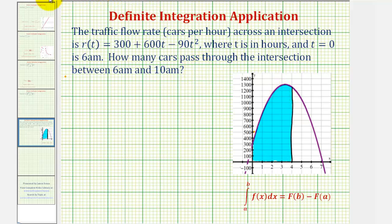So we want to determine the value of the definite integral from zero to four. Again, t equals zero is 6 a.m., and since 10 a.m. is four hours later, t equals four represents 10 a.m. of r of t.